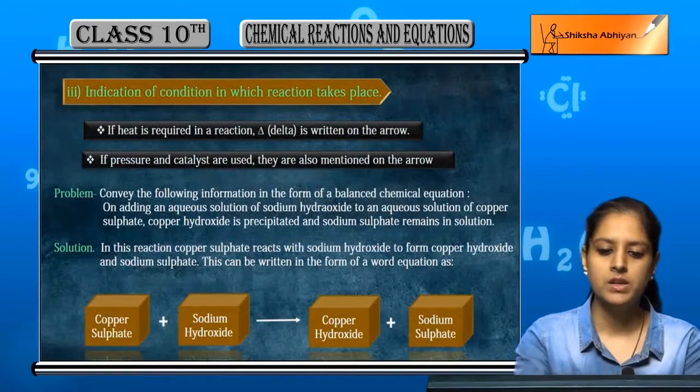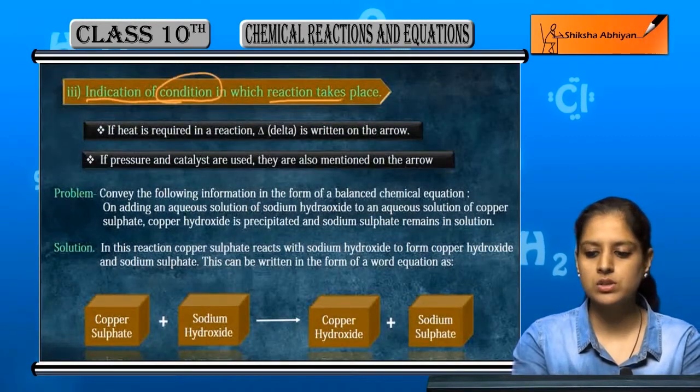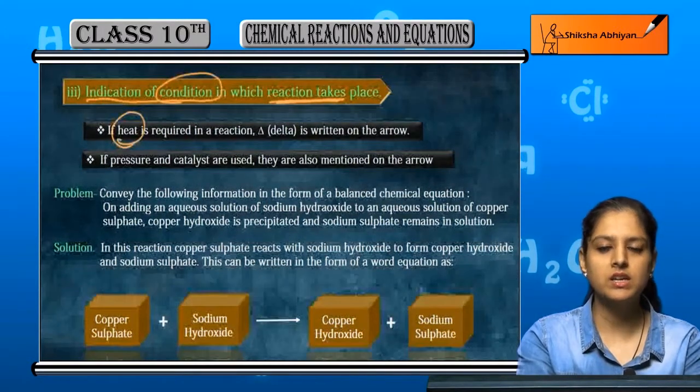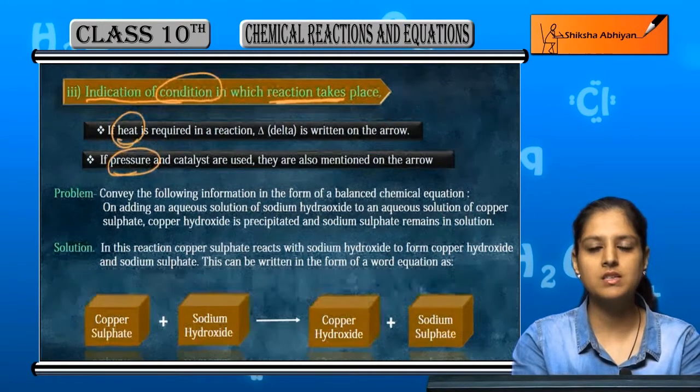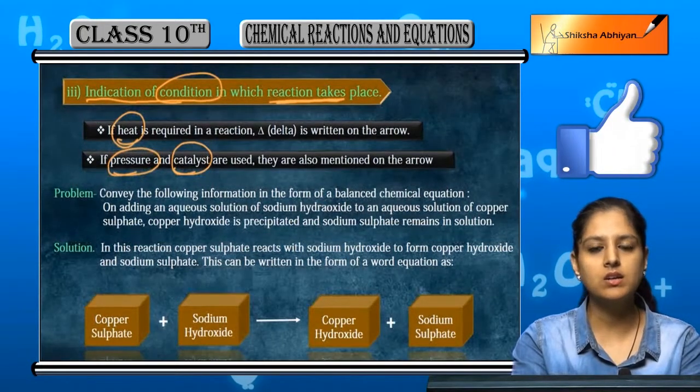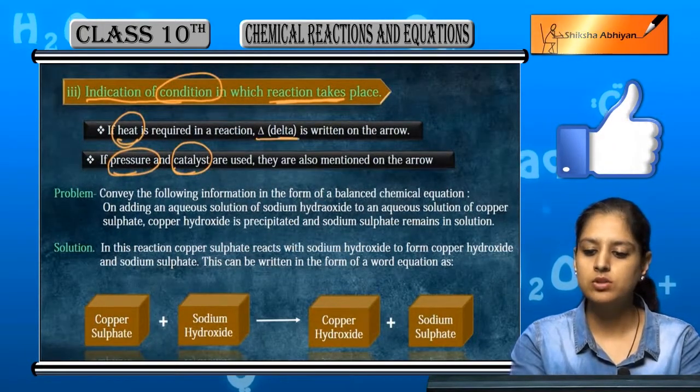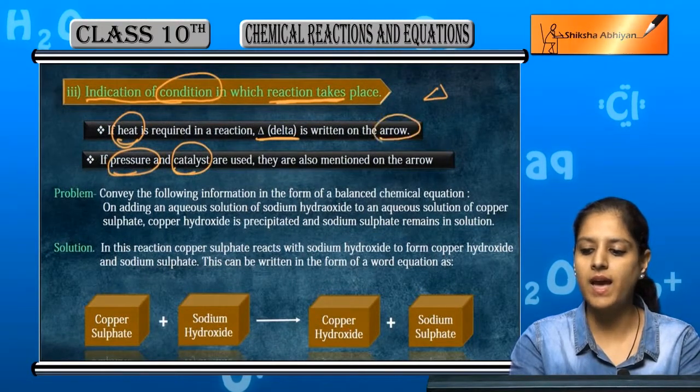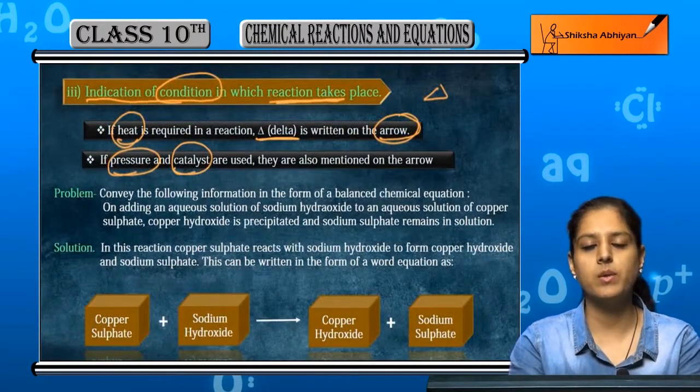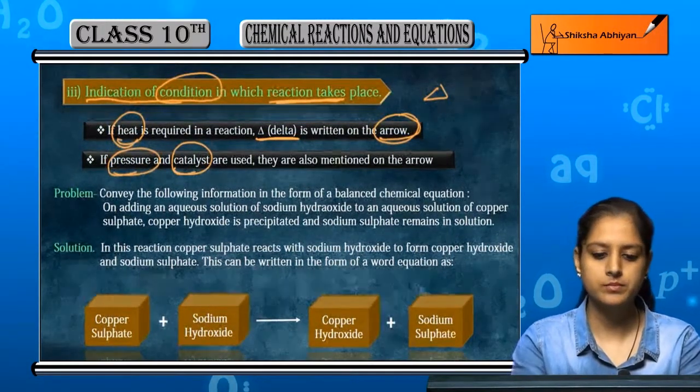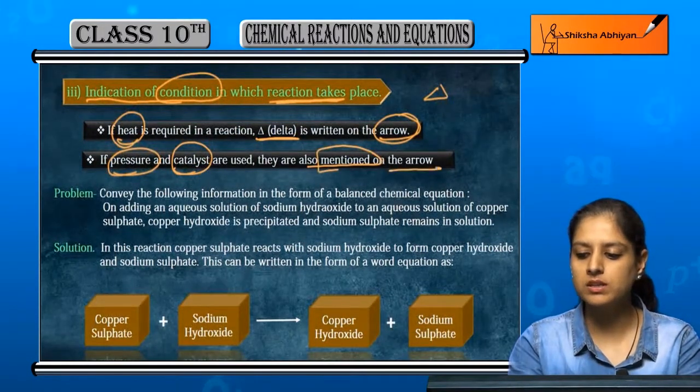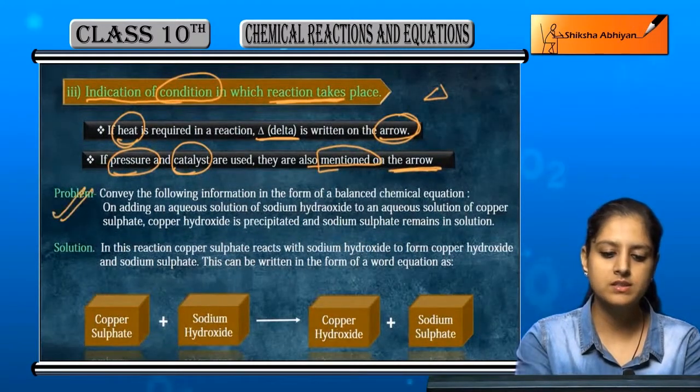Another thing that can be done is indication of condition in which reaction takes place. You can also show the condition. If heat is required, or pressure is increased or decreased, if we have involved catalysts, we can show all this. If heat is required in that reaction, we make a small triangle delta on the arrow. This indicates that heat is required to carry out the reaction.